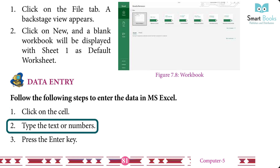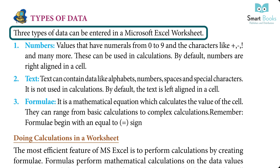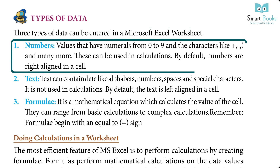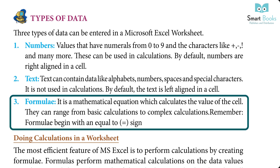Types of data that can be entered in a Microsoft Excel worksheet: One — Numbers: values containing numerals from 0 to 9 and characters like plus, minus, exclamation mark, and more; these can be used in calculations. By default, numbers are right-aligned in a cell. Two — Text: can contain alphabets, numbers, spaces, and special characters; not used in calculations. By default, text is left-aligned in a cell. Three — Formula: a mathematical equation that calculates the value of a cell, ranging from basic to complex calculations. Formulas begin with an equal-to sign.